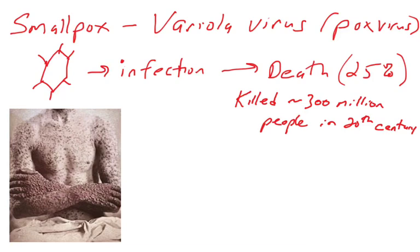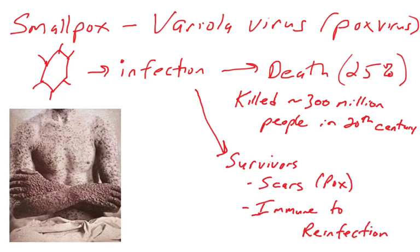Smallpox is thought to have been one of the biggest killers of humans of all time — more than wars, more than famine. It has been around for thousands of years and is a pretty lethal and infectious virus that spreads easily between people. Survivors were always immune to reinfection, so somehow the infection gave individuals lifetime immunity against smallpox.